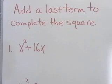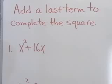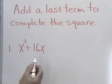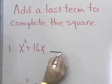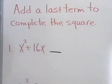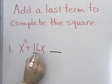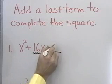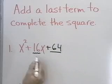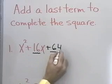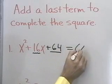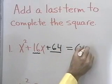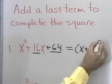I've written down: add a last term to complete the square, and my first partial trinomial is x squared plus 16x. So, I want to know, what am I going to add here on the end so that this becomes a perfect square trinomial? Well, I take half of this number — half of 16 is 8 — and square it. That gives me 64. Now, x squared plus 16x plus 64 is the binomial x plus 8, quantity squared.